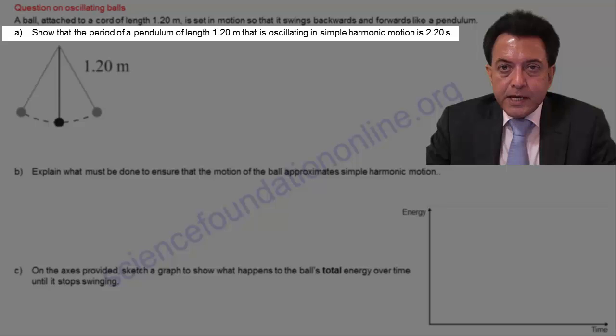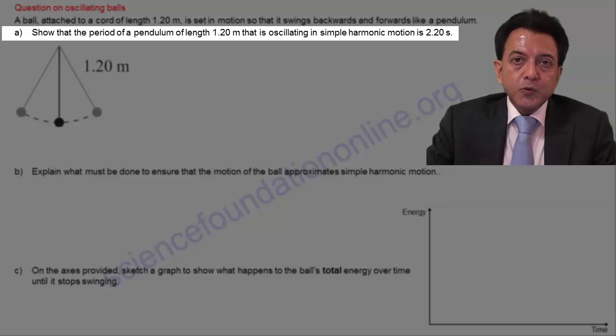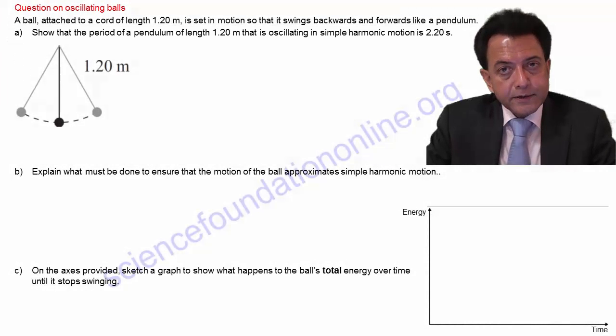Part A asks us to show that the period of a pendulum of length 1.20 meters oscillating in simple harmonic motion is 2.20 seconds. Paying attention to the keywords simple harmonic motion, it is clear that we need to apply the equation T equals 2π√(l/g) to calculate its period.